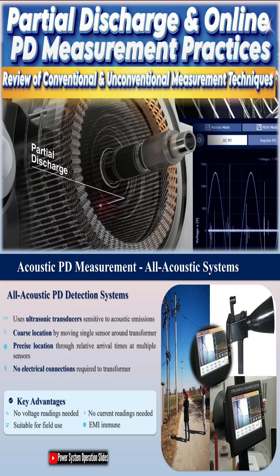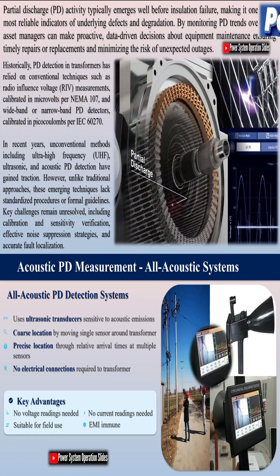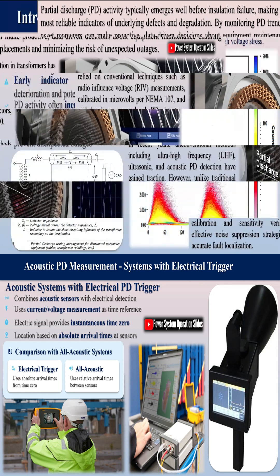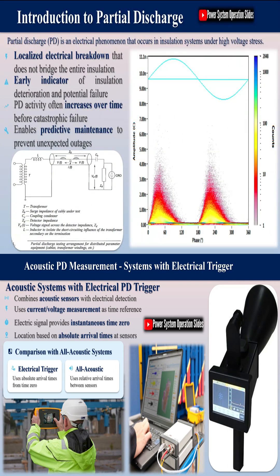Partial discharge (PD) represents a localized electrical breakdown phenomenon that occurs in insulation systems under high-voltage stress without completely bridging the insulation. This phenomenon serves as one of the earliest and most evident indicators of insulation defects and deterioration, making it a critical parameter for condition monitoring of high-voltage equipment.